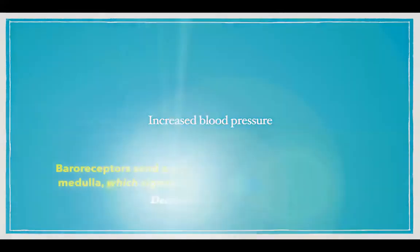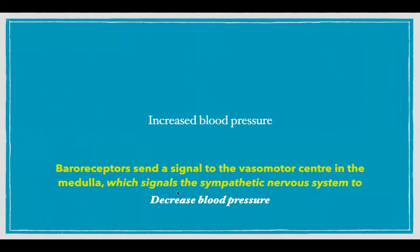When the blood pressure is increased, the baroreceptors send a signal to the vasomotor center — that is, within the medulla they send a signal to the nucleus tractus solitarius. This nucleus interprets the increase in blood pressure and its function is to inhibit the sympathetic output through the rostral ventrolateral medulla, which then decreases the blood pressure.